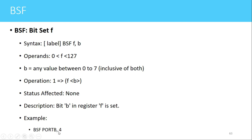An example of this instruction is BSF PORTB comma 4. The meaning is that bit number 4 of the PORTB register will be set, or made equal to 1. One thing to remember is that the starting bit position is 0, so bits are numbered 0 to 7, meaning bit number 4 is actually the fifth bit of this register.